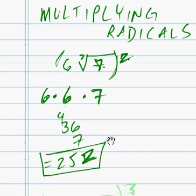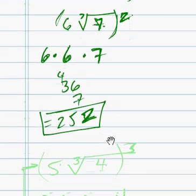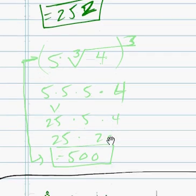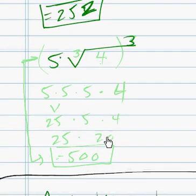So let's do another one just to recap. We have the same thing with cubes. If you have the cube root of something, we'll say 5 times the cube root of 4 cubed, or all to the third power, you know that the 4 is just going to pop right out.